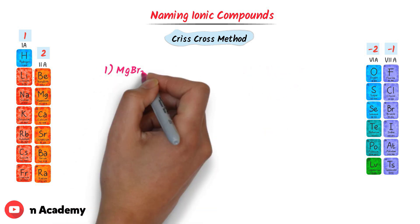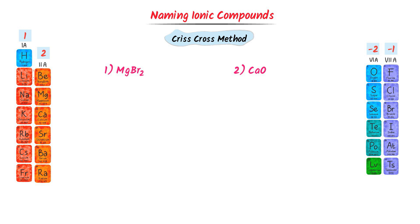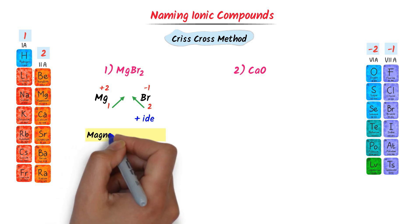Now consider these ionic formulae and write their respective names. Firstly, for magnesium bromide: according to the criss-cross method, the subscript 2 belongs to magnesium, so magnesium carries +2 charge, and the subscript 1 belongs to bromine, so bromine carries −1 charge. Mg stands for magnesium and Br stands for bromine, but we add -IDE at the end. So we get magnesium bromide.